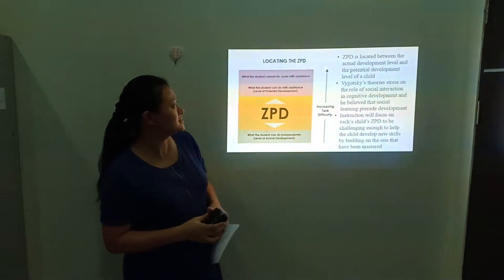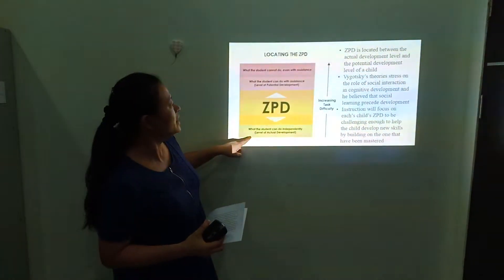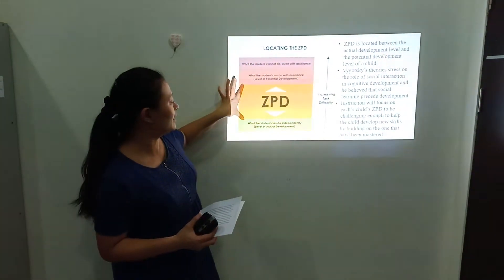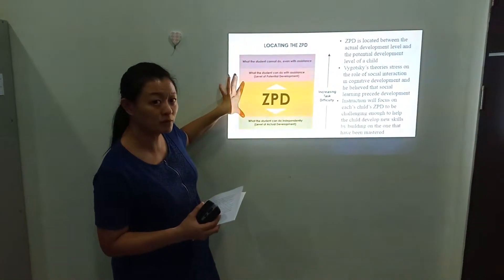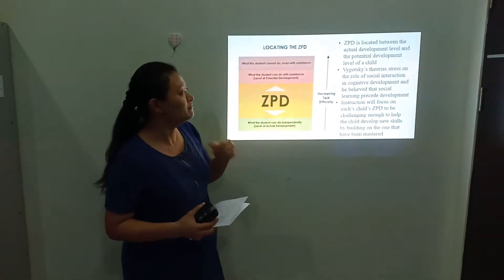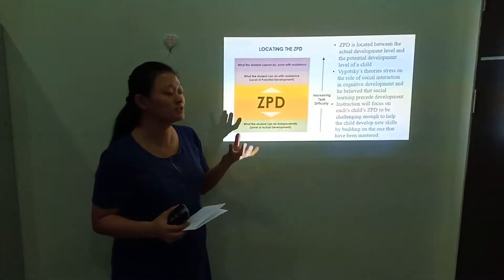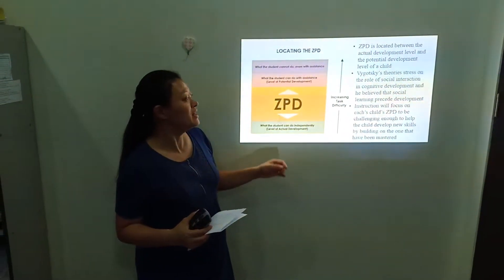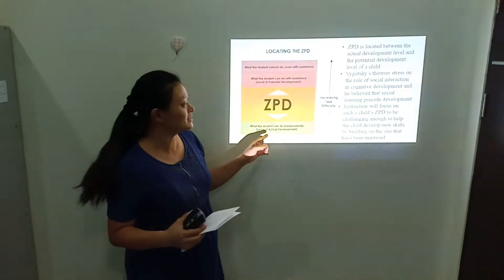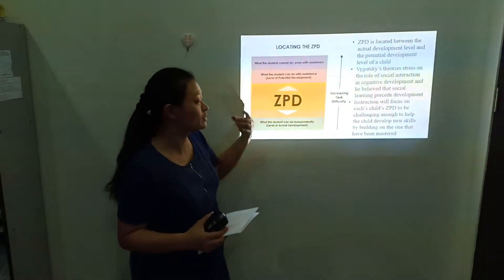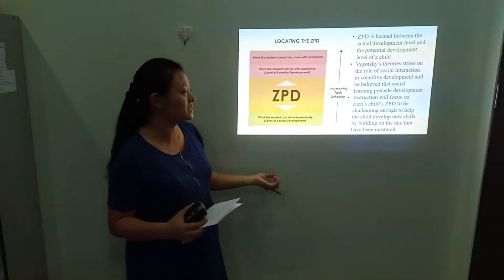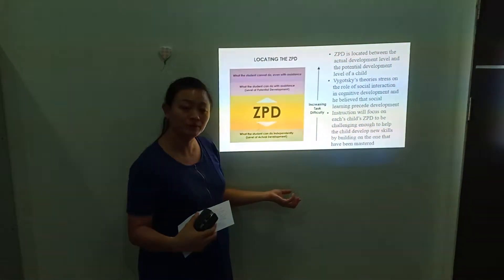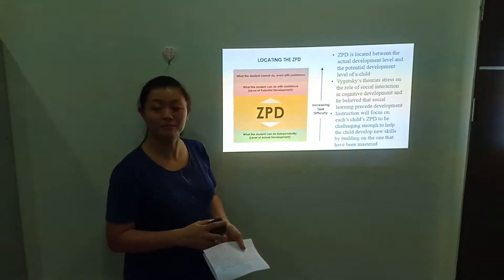As we can see, the ZPD is located between the actual development and the potential development of a child — that level in between is the zone of proximal development. Vygotsky's theory stressed on the role of social interaction in cognitive development and he believes that social learning precedes development. Instruction will focus on each child's ZPD to be challenging enough to help the child develop new skills by building on those already mastered.